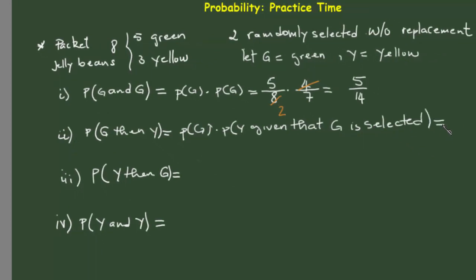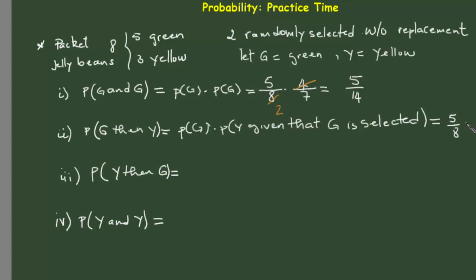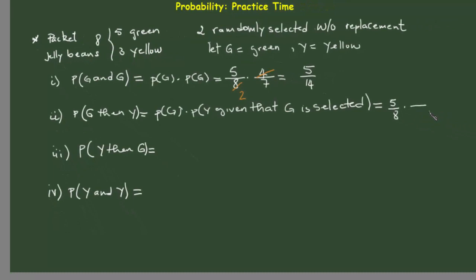The probability of having a green is 5/8. Once we've chosen one green, we have seven remaining in the packet. This time we're choosing a yellow — we have three yellow, so we choose one yellow out of three, giving us 5/8 times 3/7. This equals 15/56, which cannot be simplified further.